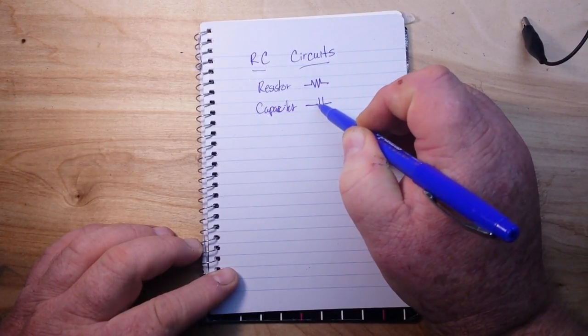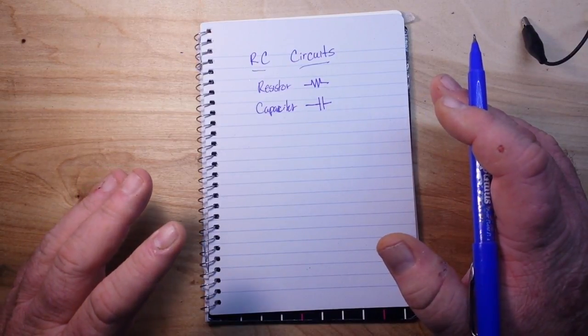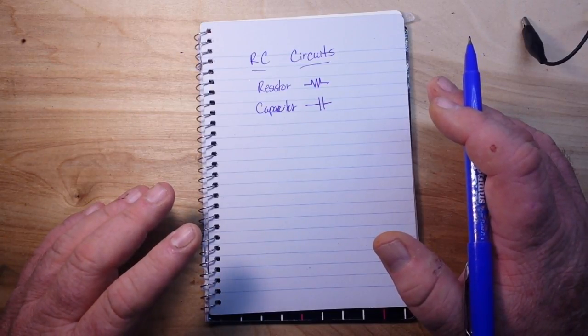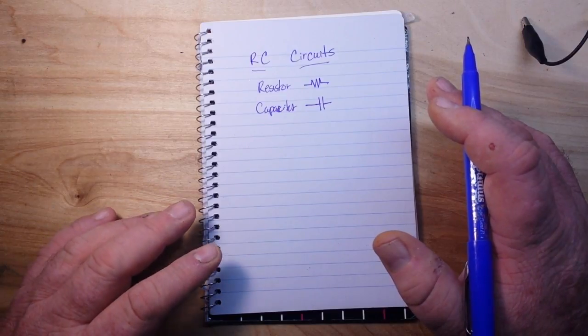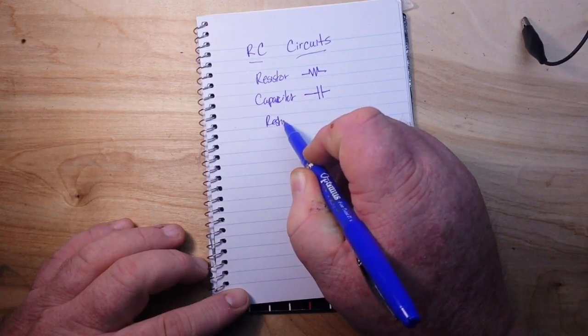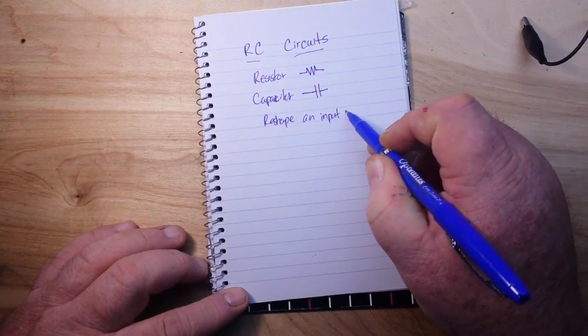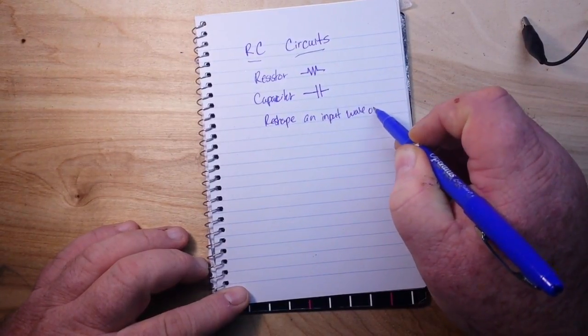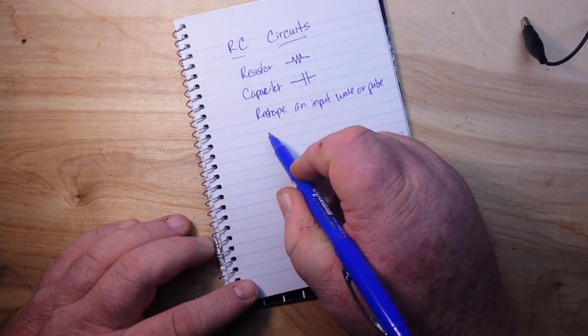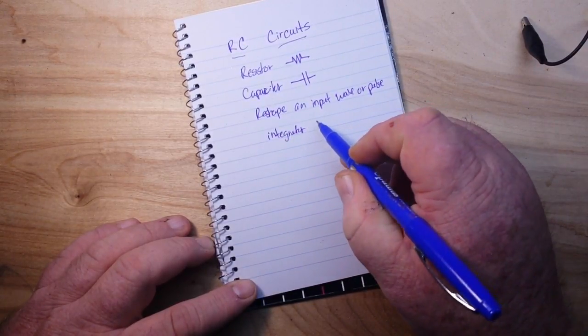There are many different types of circuits that use resistors and capacitors, but we're going to talk about two of the very simple ones today. These circuits are used to reshape an input wave or pulse.